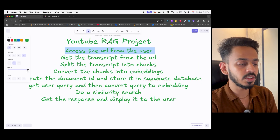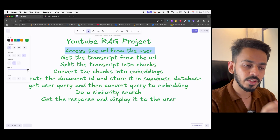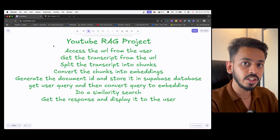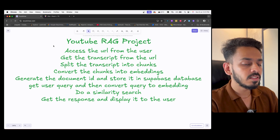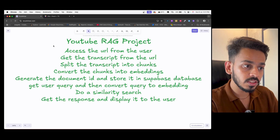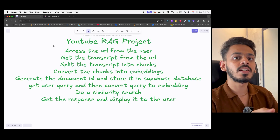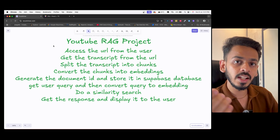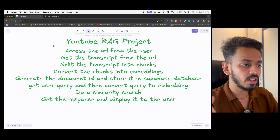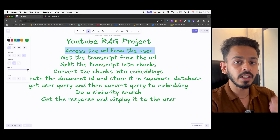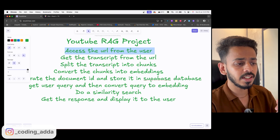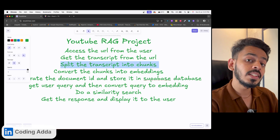The first step for our YouTube RAG project is to get the YouTube video URL from the user, because we want to chat with the YouTube video. The next step is to convert that URL and get the transcript of the video. YouTube provides transcripts for all videos — a transcript is basically a voice-to-text converted form of everything spoken in that video.